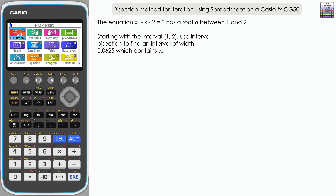Let's take a look at the question. We've got the equation x cubed minus x minus 2 equals 0, which has a root alpha between 1 and 2. Starting with the interval 1 to 2, we use interval bisection to find an interval of width 0.0625 — that's one sixteenth — which contains alpha. We're also going to be tracking this using the graph visually.